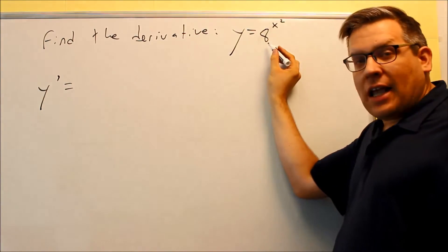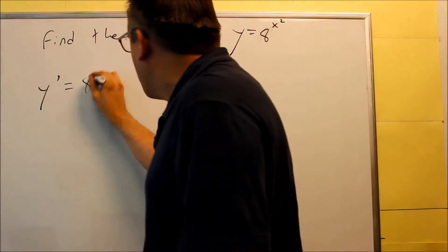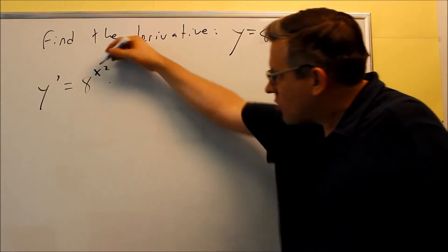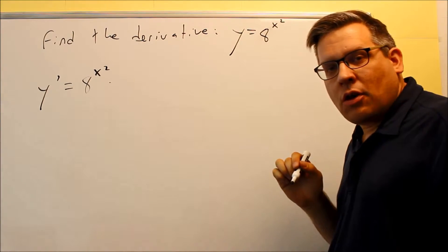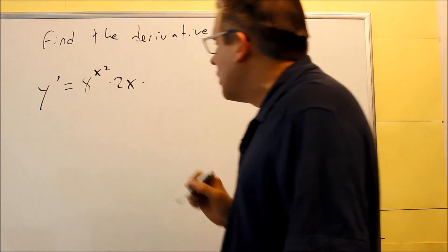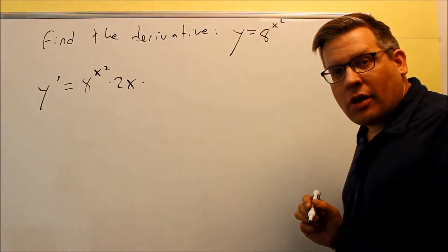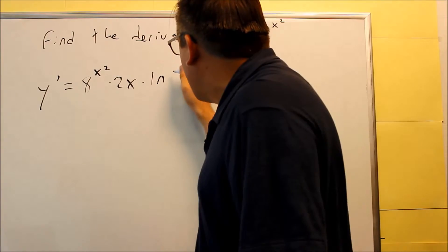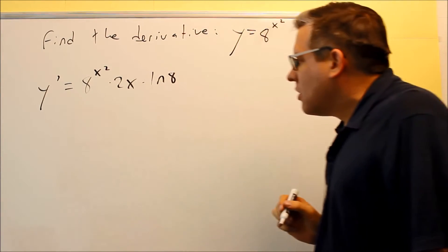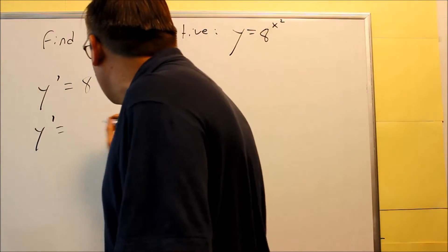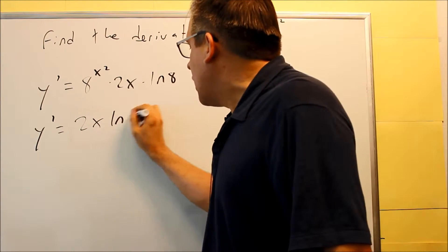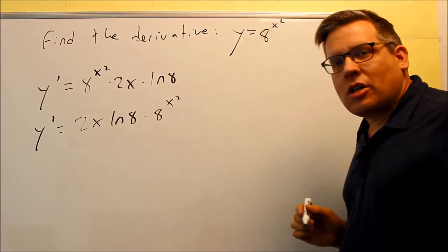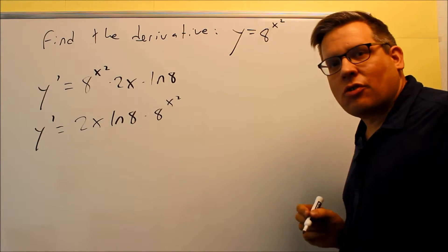Okay, we have a to the u, which is just our original one, 8 to the x squared times the derivative of u, so the derivative of the exponent, derivative of x squared is 2x. And then we have to do ln of a. The a is the base that you have, so this is going to be ln of 8. So, now it's just a matter of rewriting it, I'm going to put 2x ln 8 out front, and then just multiply that by 8 to the x squared. There's not really any more you can do with that, so this is your final answer.